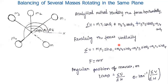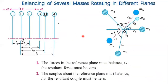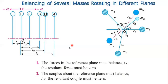Case four is balancing of several masses rotating in different planes. We have different masses M1, M2, M3, M4, all rotating in different planes, and we add two masses to counterbalance them. The position of planes is laid out with distances from a reference plane — planes to the left of the reference plane are negative and to the right are positive. Two conditions must be satisfied: net force equal to zero and net couple equal to zero.